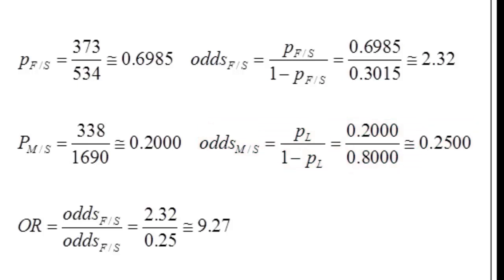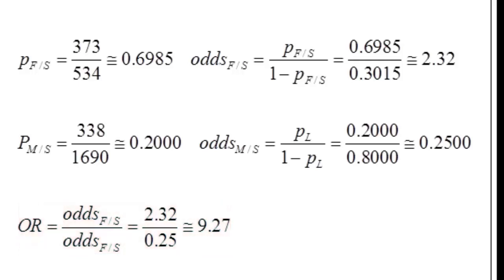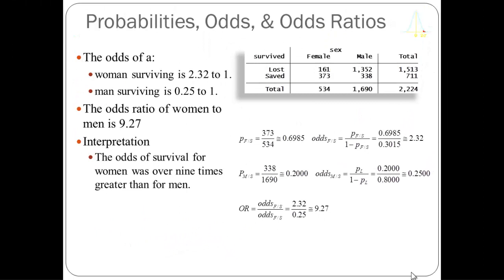How can we compare these two odds? The female odds of survival are 2.32 to 1; the male odds are 0.25 to 1. Men's survival is less than chance (1:1) and women's is greater than chance. To compare, we take the ratio of the two odds — called the odds ratio. The odds ratio of women surviving to men surviving is 2.32 divided by 0.25, or 9.27. Women were over nine times more likely to survive the Titanic than men.